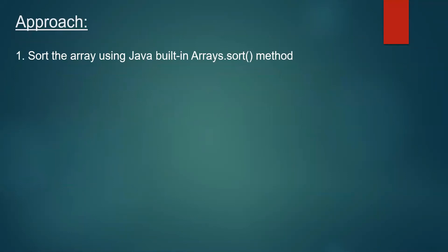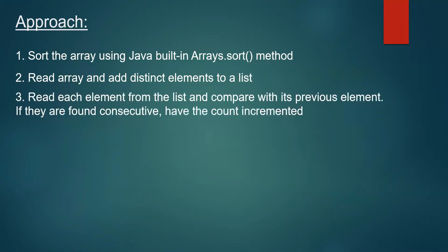First, we are going to sort the array using Java's built-in Arrays.sort method. Then in the sorted array, we'll read each element and add only distinct elements to a list, as that is what the problem asks. We then read each element from the list and compare it with its previous element. If they are found consecutive, we increment a count variable. Finally, we return the maximum count, which gives us the length of the longest consecutive sequence.